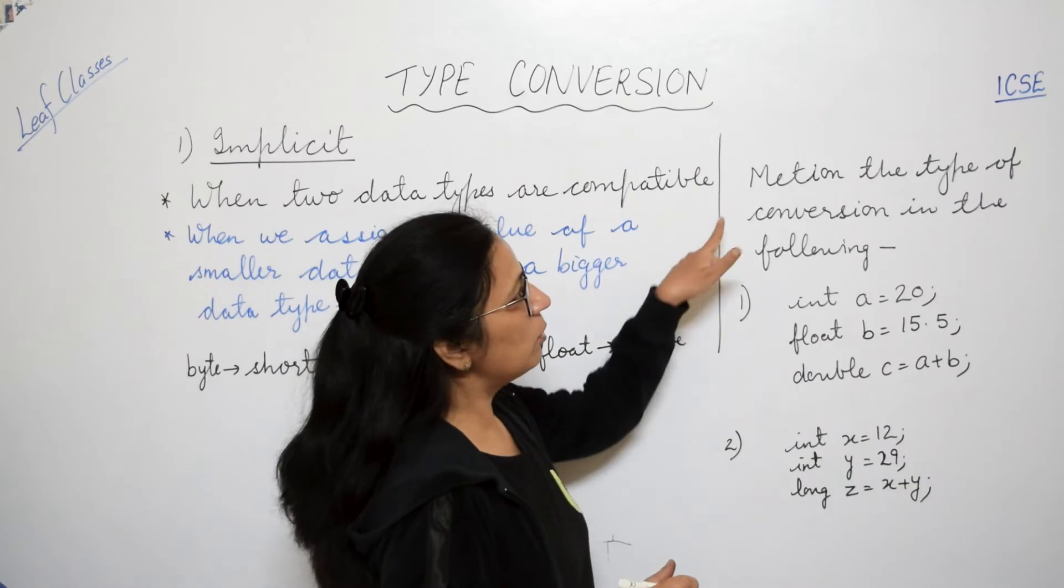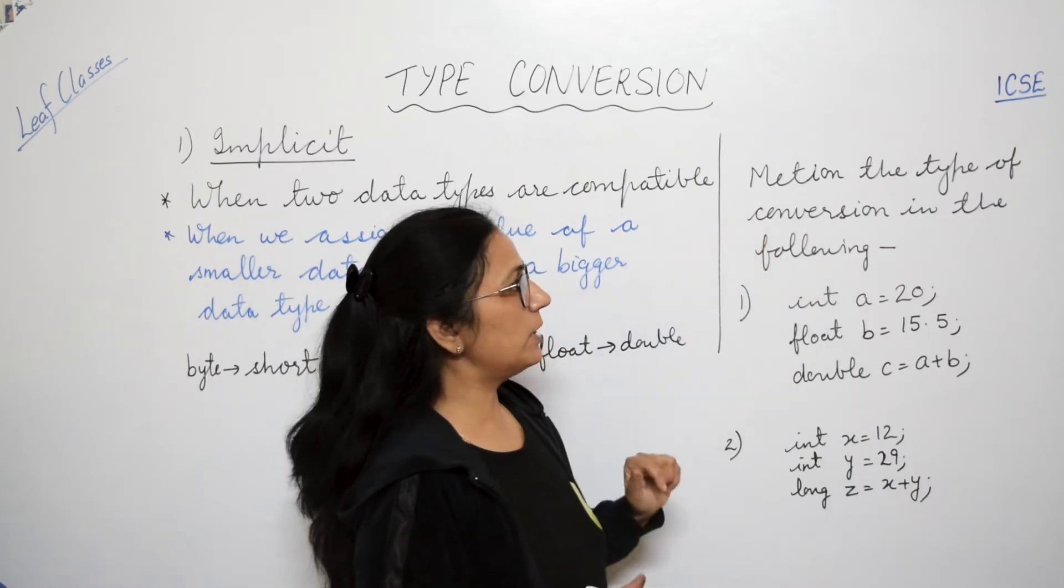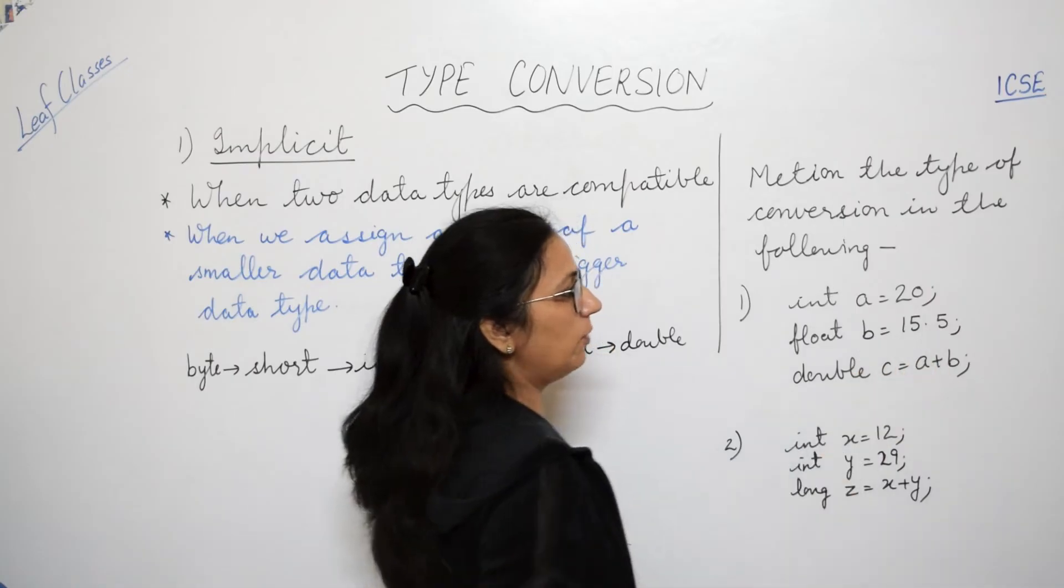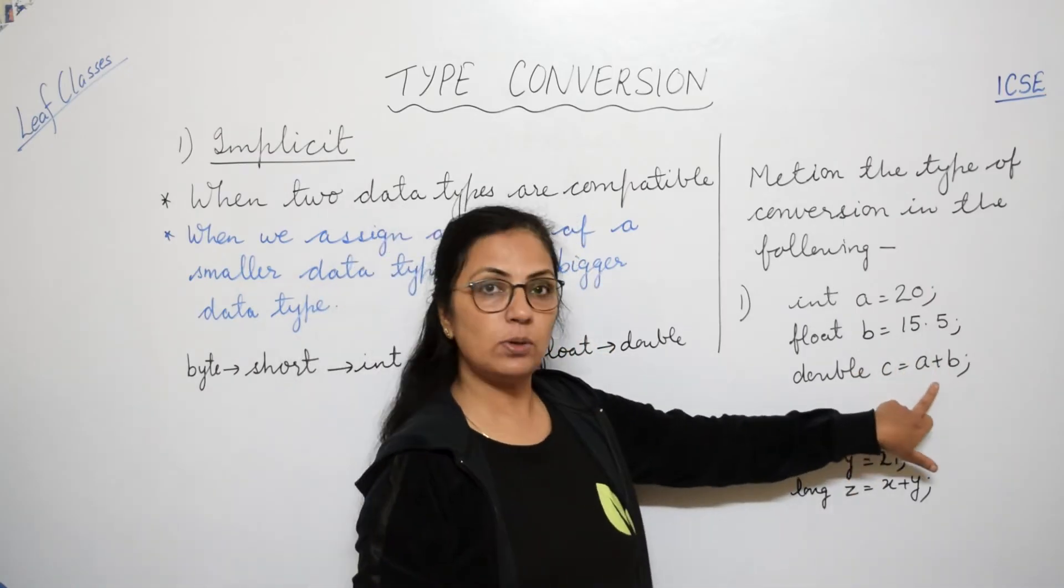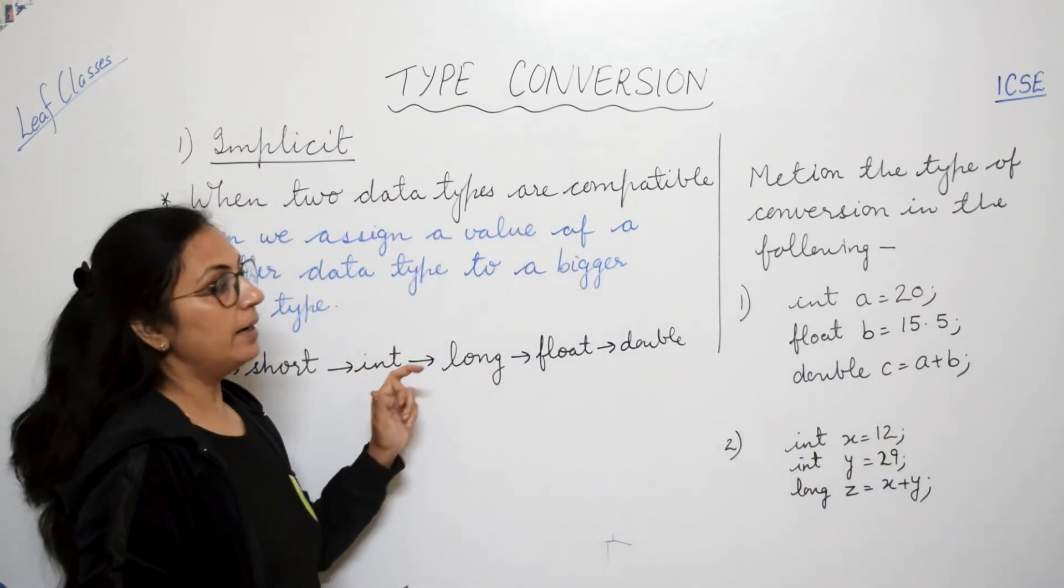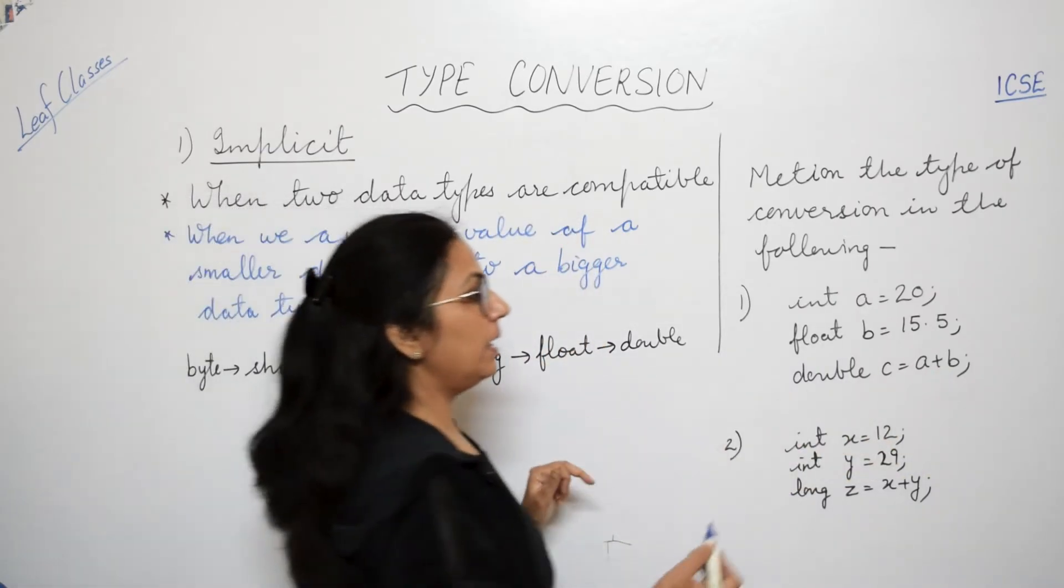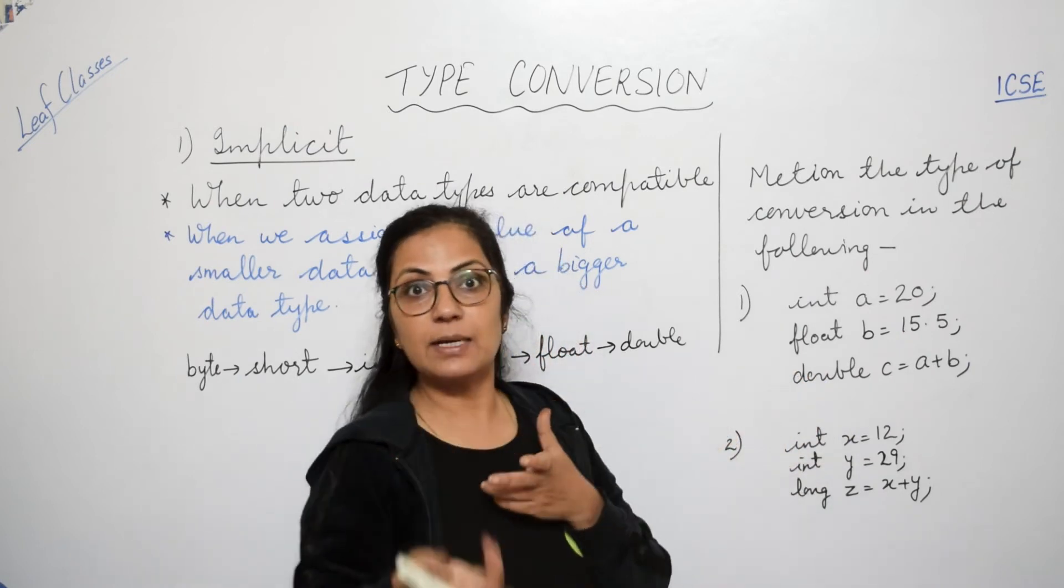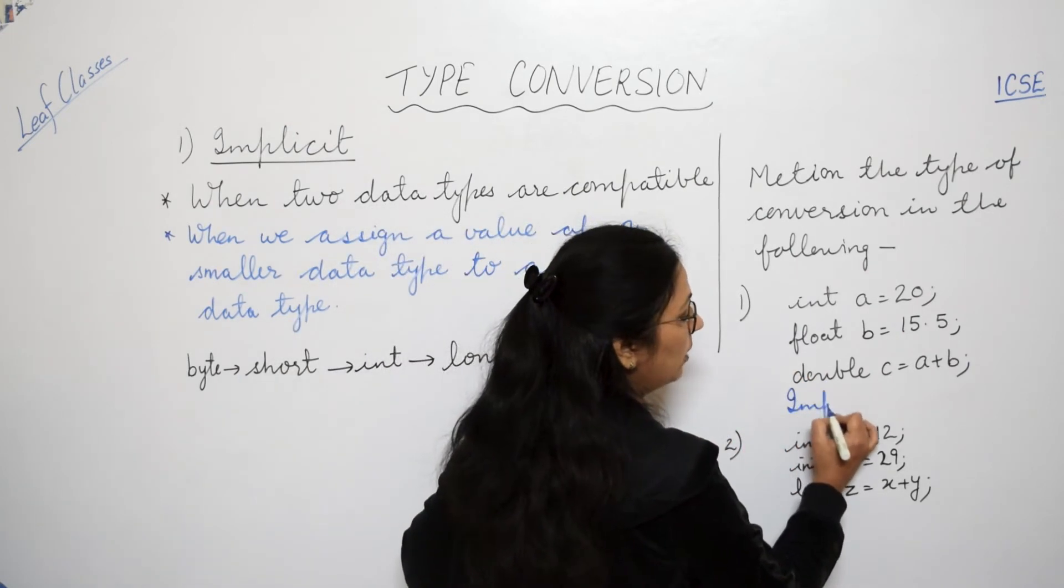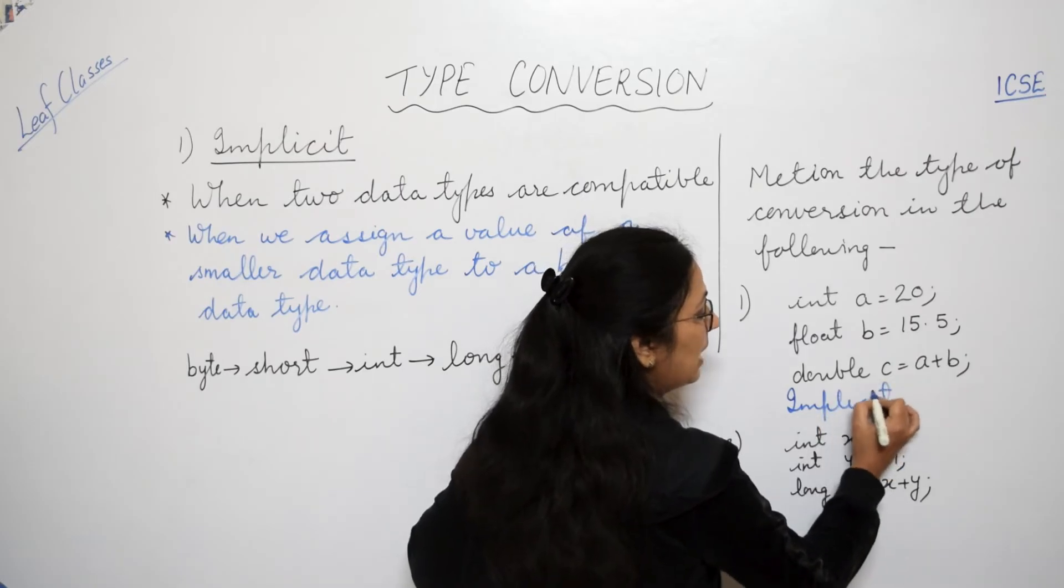In exams you get such type of questions. Mention the type of conversion in the following. Int a equals to 20, float b equals to 15.5, and double c equals to a plus b. Now a is int type, b is float type, but as per this, double has the higher priority. So automatic this conversion is taking place. So what will be the answer? The type of conversion is implicit type conversion.